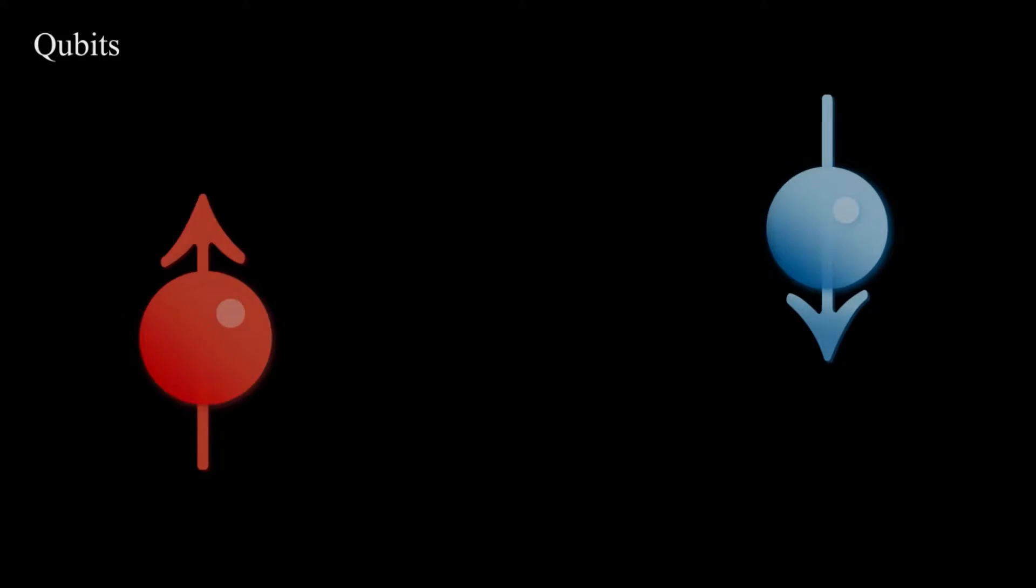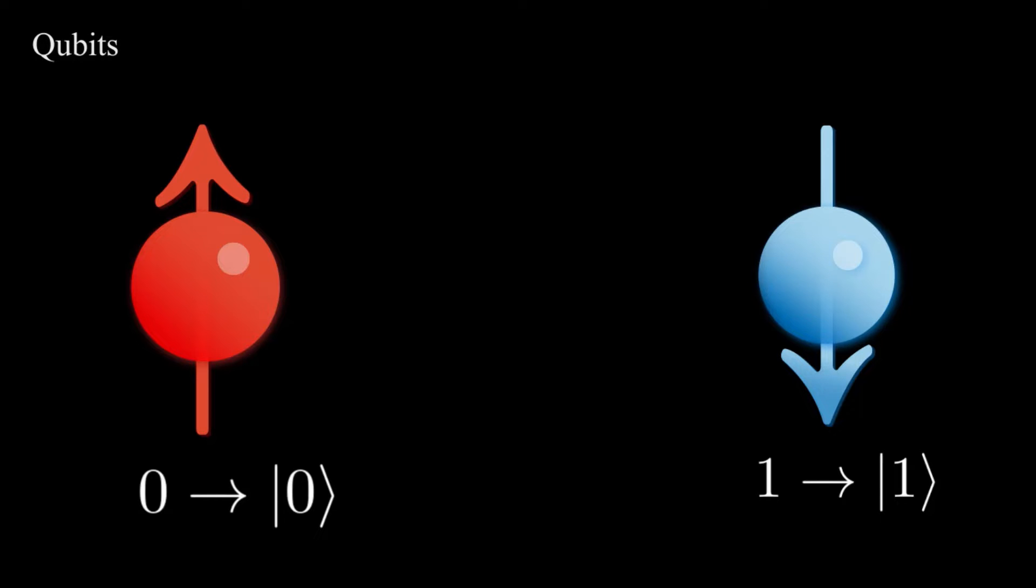Mathematically, the state of an isolated physical system is represented by a state vector belonging to Hilbert space. For our purpose, we will only focus on the simple two-level system, which is also referred to as a qubit. Let ket0 denote one possible state of the system, and ket1 denote another possible state.